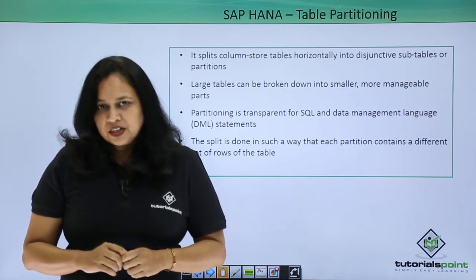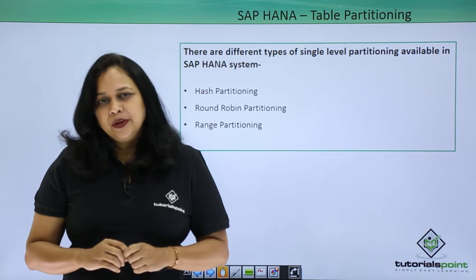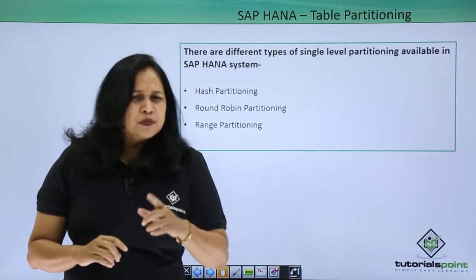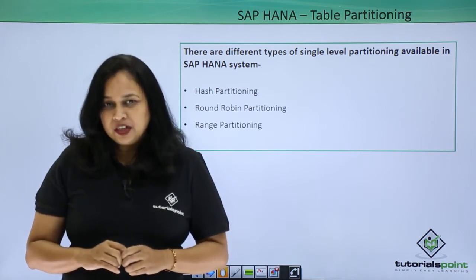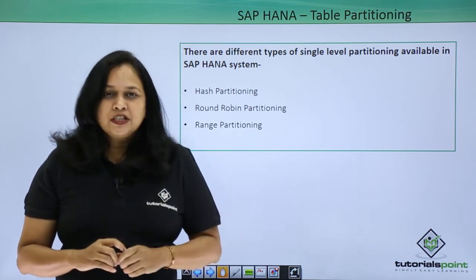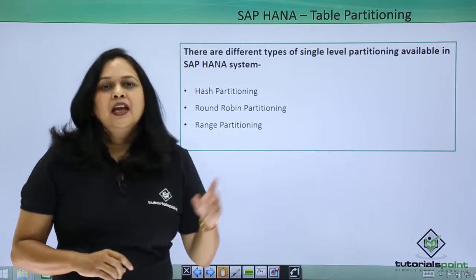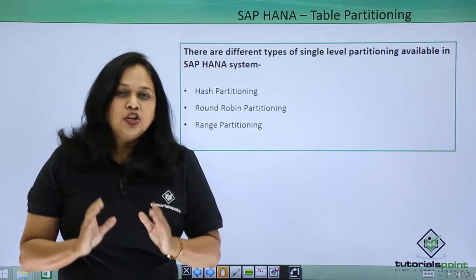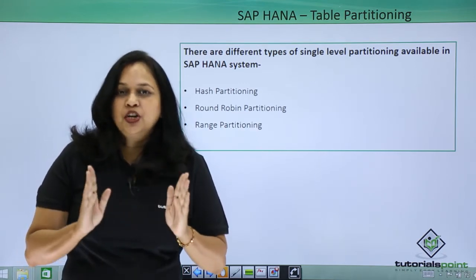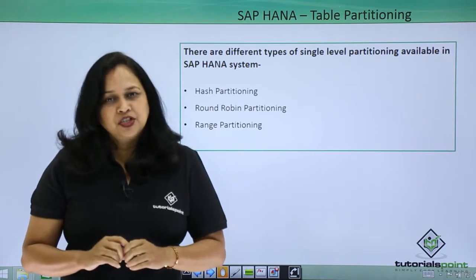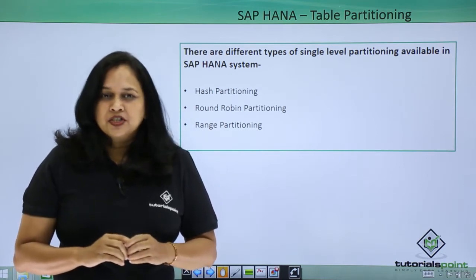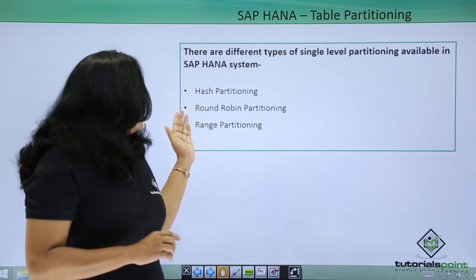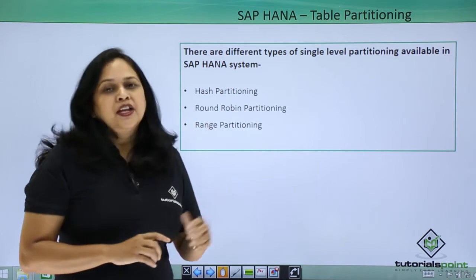When a table is partitioned, the split is done in such a way that each partition contains a different set of rows of the table. To specify how the rows are assigned to the partitions, several alternatives are available. Rows are distributed to partitions according to different criteria known as partitioning specifications. The types of single-level partitioning available in SAP HANA are hash partitioning, round robin partitioning, and range partitioning.